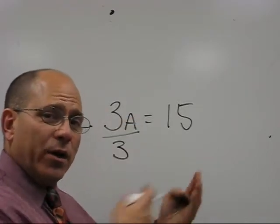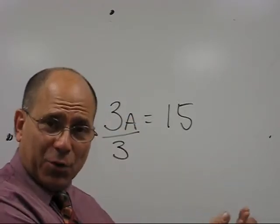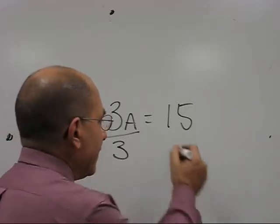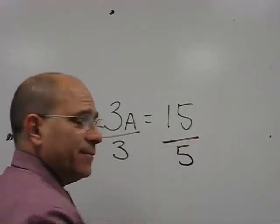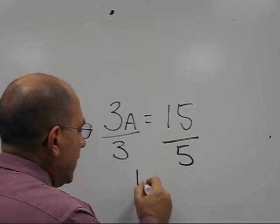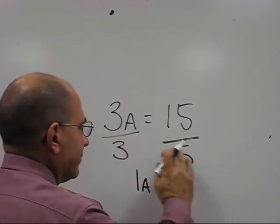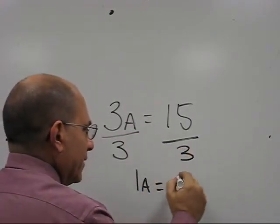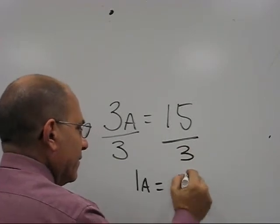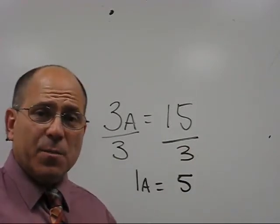Remember that idea about what you do on one side of the equal sign, you have to do it on the other side? Well, we're going to do that again. You do this just like this. So this then says 1a equals 5. Like this. And that's my answer. a equals 5.